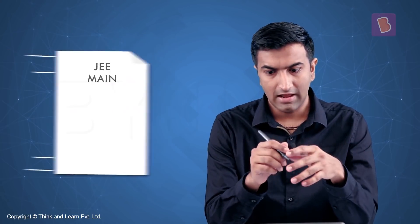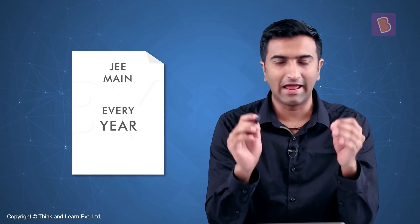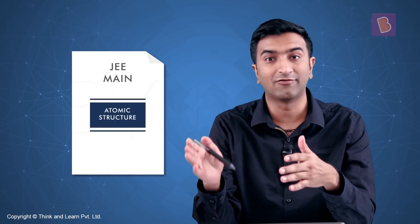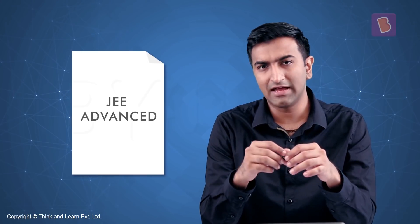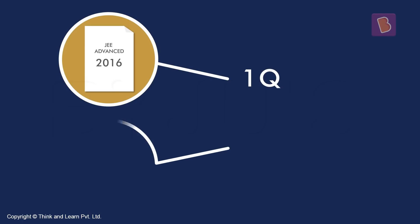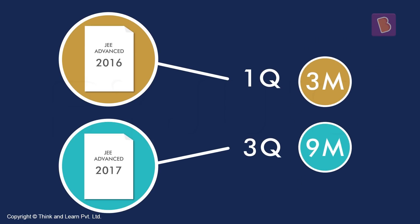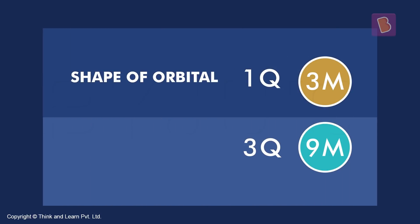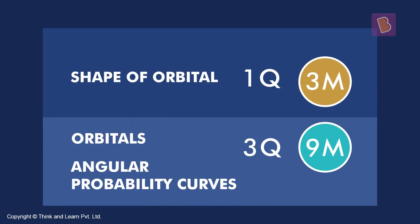We're going to take a look at the chapter atomic structure, specifically from the point of view of the JEE examination. In the JEE Main exam, almost every year at least one question is asked from atomic structure. In JEE Advanced, in 2016 there was one question, in 2017 there were three questions. Most of this was on the solution to the Schrödinger wave equation — angular probability, shapes of orbitals, and things like that. The most important concepts from this chapter that are generally tested in both Main and Advanced are now in front of you.